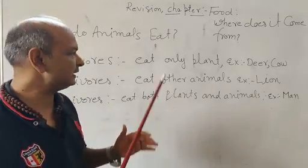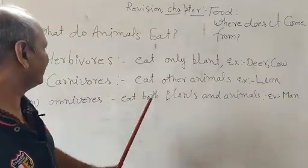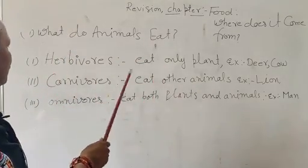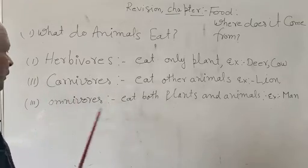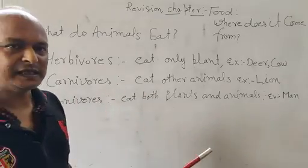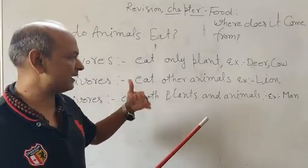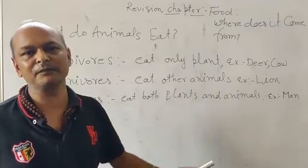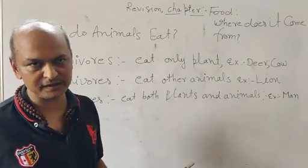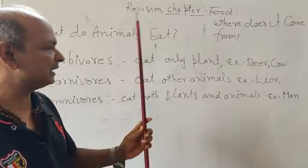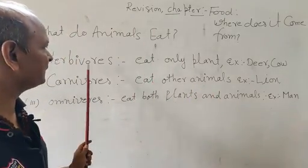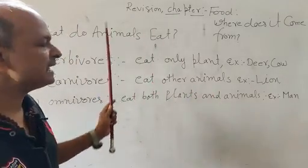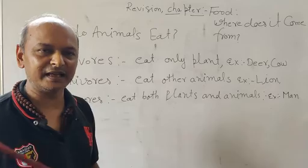So these are the three categories: herbivorous, carnivorous, and omnivorous. This is the definition I have sent you first in the PDF, and we have revised it for you again.